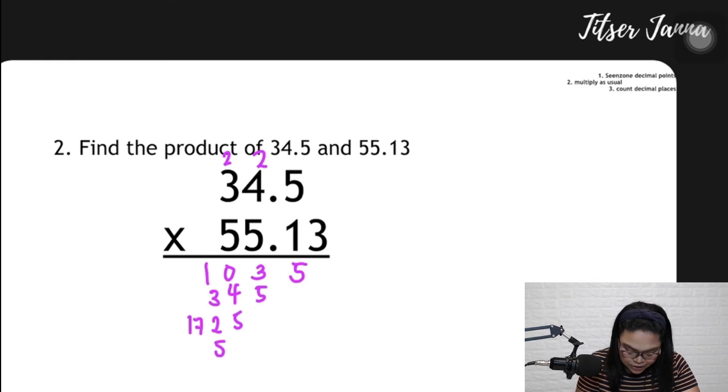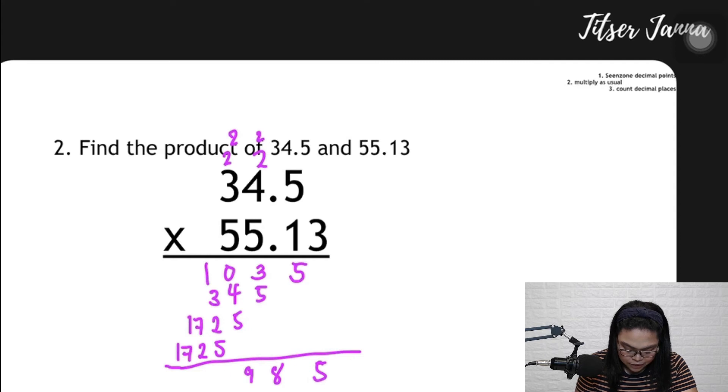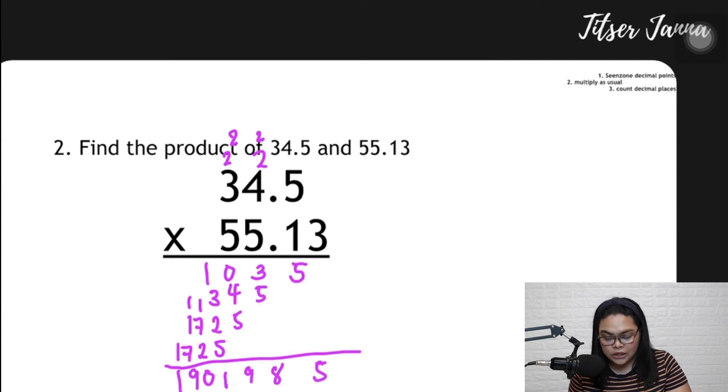5 times 5 is 25. 5 times 4 is 20, plus 2 is 22. 5 times 3 is 15, plus 2 is 17. And then we add up all these numbers. 5, bring down, 3 plus 5 is 8. 0 plus 4 is 4, plus 5 is 9. 1 plus 3 is 4, plus 2 is 6, plus 5 is 11. 1 plus 7 is 8, plus 2, that is 10. 2, 1, 2, and then 7. 2 plus 7 is 9, and then 1.